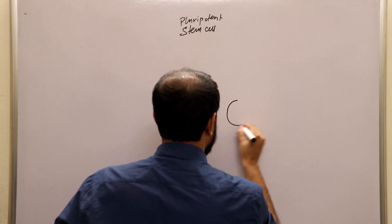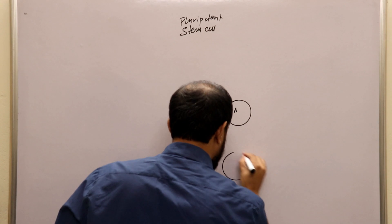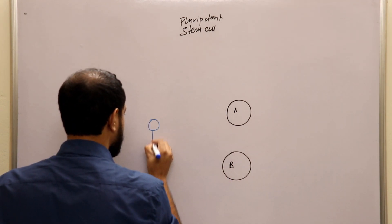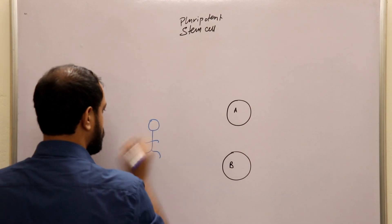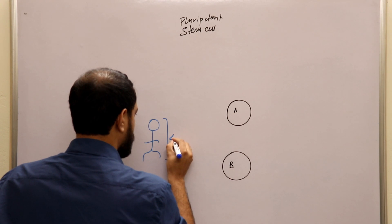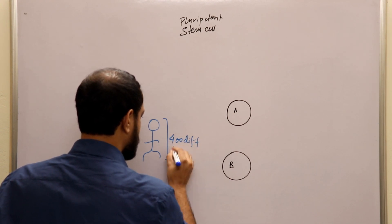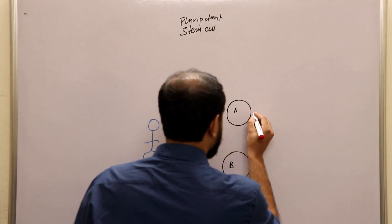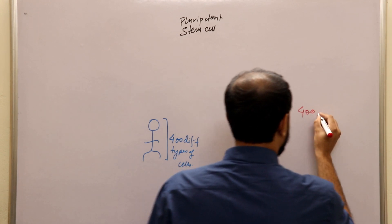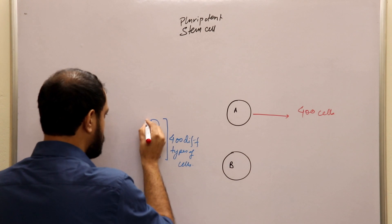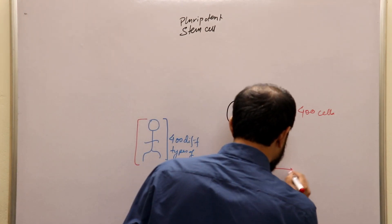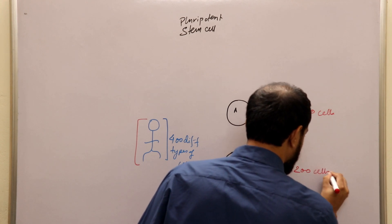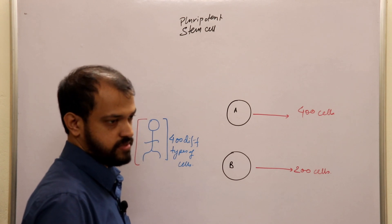What is a pluripotent stem cell? Suppose this organism has 400 different types of cells. If cell A can give rise to all 400 cells, and cell B can give rise to only 200 out of 400, which one is pluripotent and which one is totipotent?